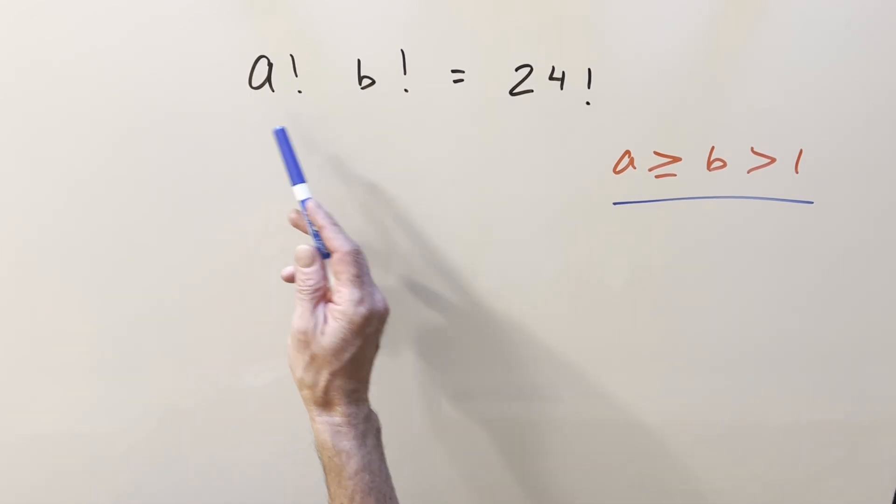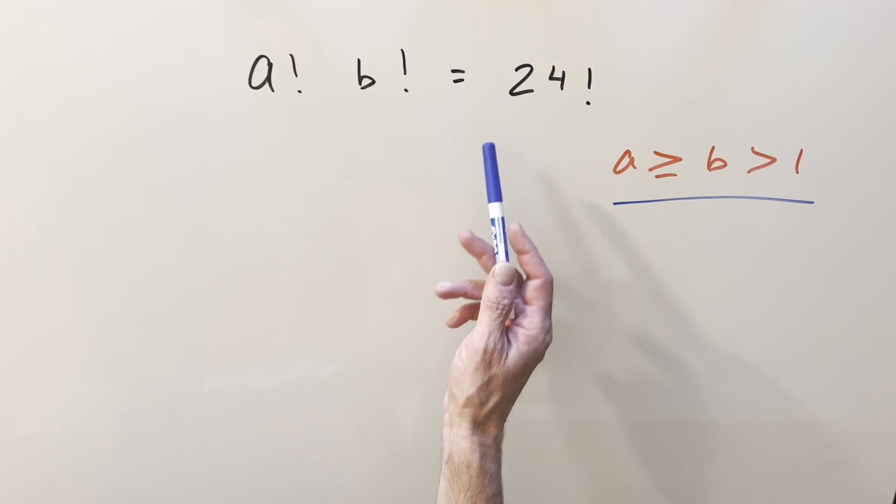I did a problem recently where we had a factorial times b factorial equals 10 factorial. I wanted to do this one because it's kind of the same kind of problem, but it's a different case. But we will do the same kind of thing.